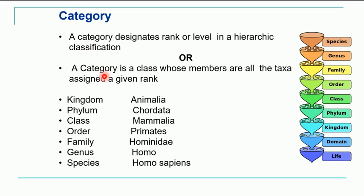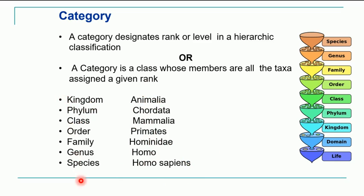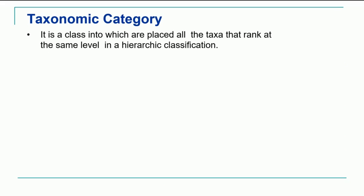Now, category is any rank or level. In the classification of organisms there are different levels at which we classify any organism, and these ranks or levels are nothing but categories. A category can also be defined as a class whose members are all the taxa assigned to a given rank. For example, for Homo sapiens we follow this order of categories: kingdom, phylum, class, order, family, genus, species — all these become the different categories of taxonomic classification. In simplified terms, a category is a class or group in which we place all organisms at the same level of hierarchical classification.